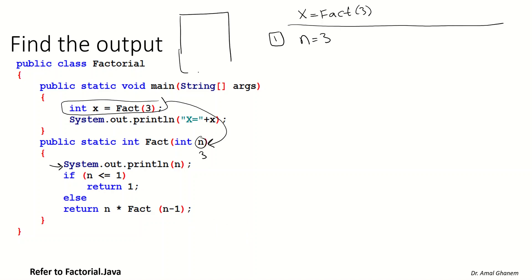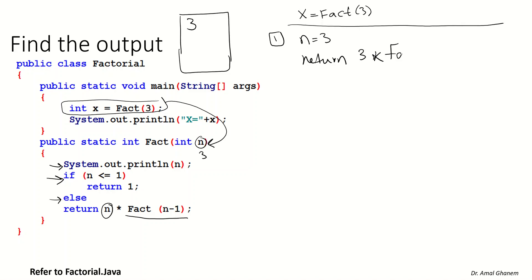So the first output value will be 3. Then we check the condition: if n is less than or equal to 1 — the current value of n is 3, so it is not 1. We go to the else part. In the else, we return n, which is currently 3, multiplied by the method again with n minus 1, which is 3 minus 1 equals 2.